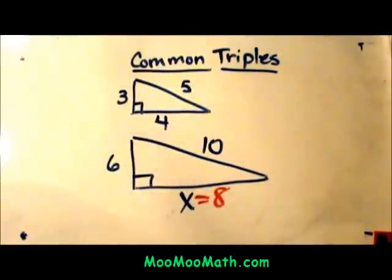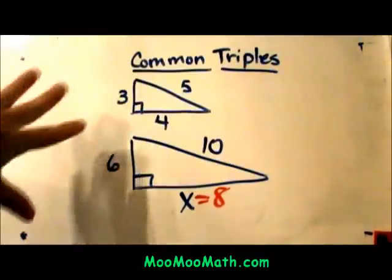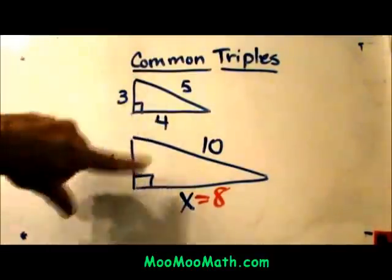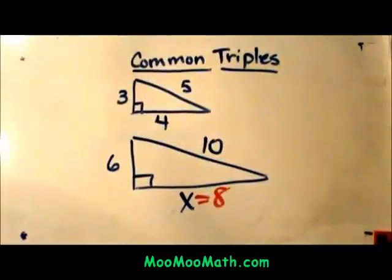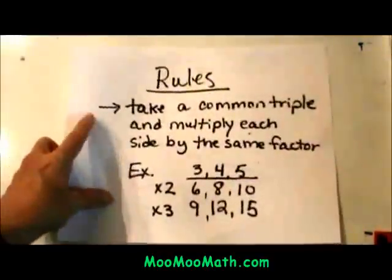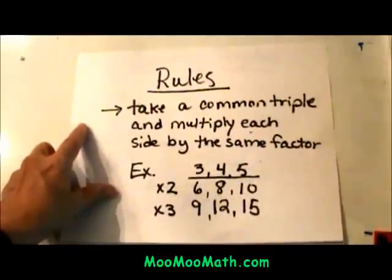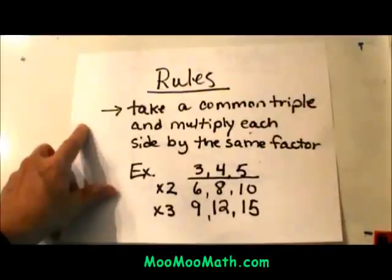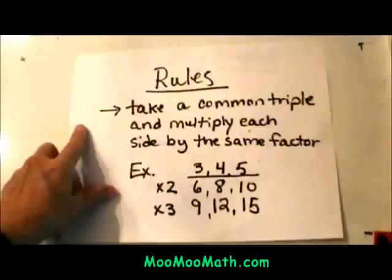This is just applying the Pythagorean theorem triple to an actual problem. So you're looking for shortcuts for the Pythagorean theorem triples. What are the actual rules to do this? We're going to make a chart in a second. What you're going to do is take your common triple and multiply each side by the same factor.